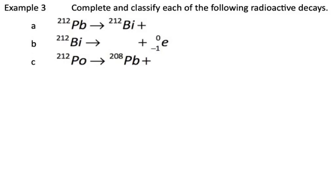In this example, I've given you some partially completed decay equations, and we need to finish them. So in A, we have lead 212.